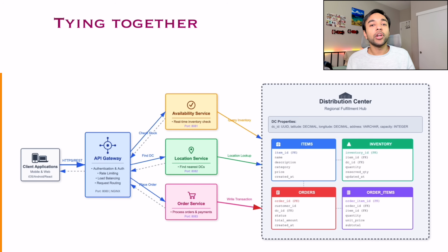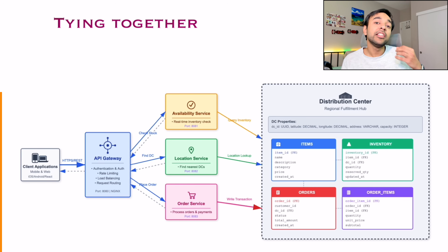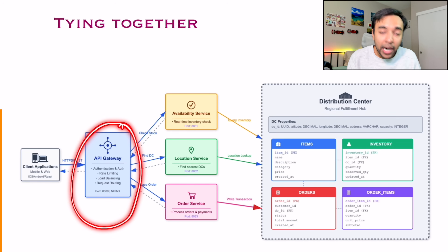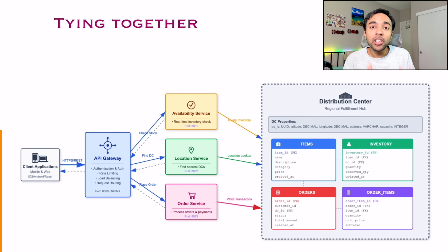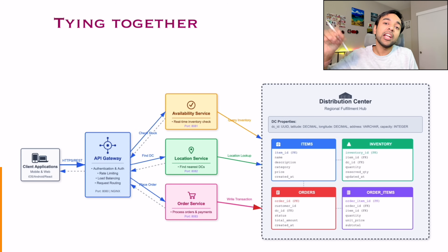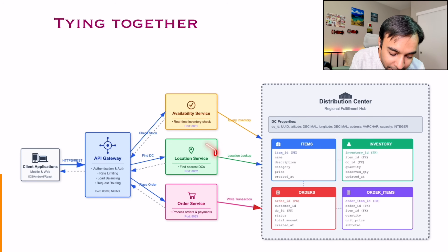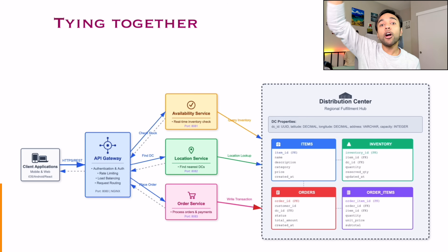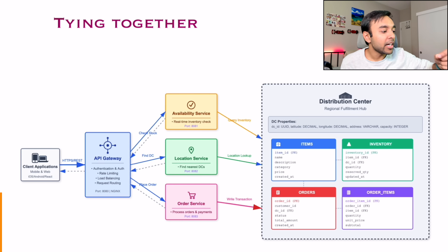If you now want to tie up everything together — first of all, you have your client application. This could be a mobile app or a web app. This is where the user actually logs in and starts to make a purchase. The next part is your API gateway, which we have discussed in a previous video in great detail. This is where your actual gatekeeping happens — you determine if this user is valid or not, you have all of your rate limiting here, your load balancers and you keep out all of the security threats. The API gateway now connects to all of your microservices. The first part is the location service — you need to determine what all distribution centers are near you.